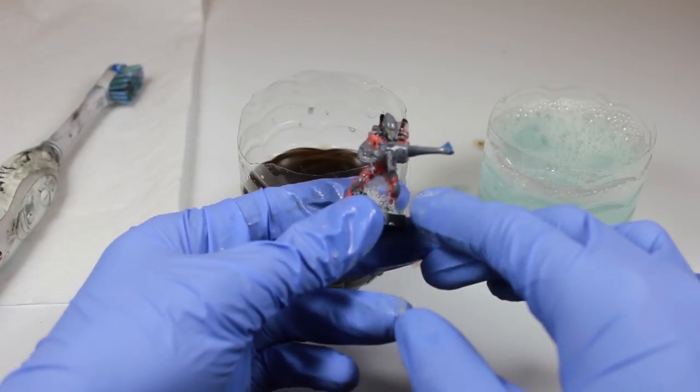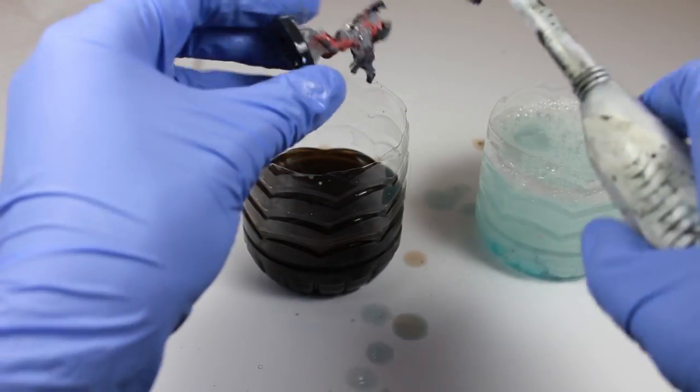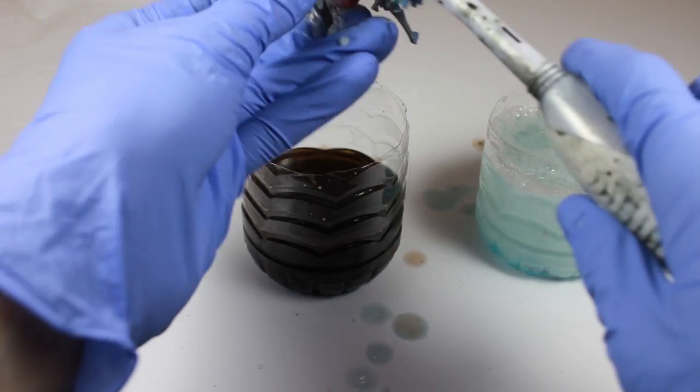And all you have to do is put it in a container and then put your models in. So these models were in there for about two to four hours, and the paint is just coming right off of them.